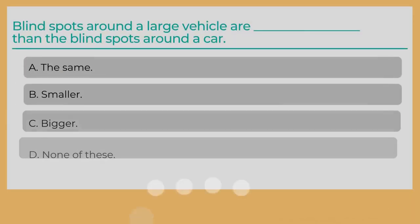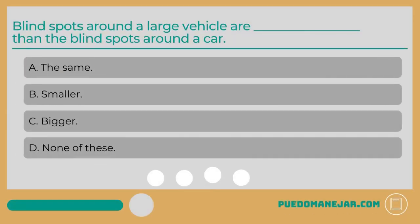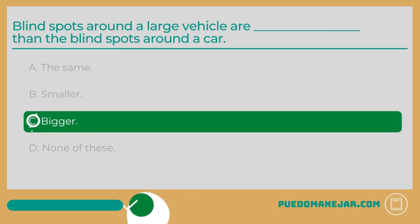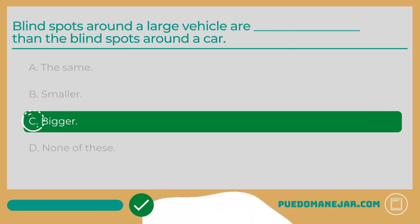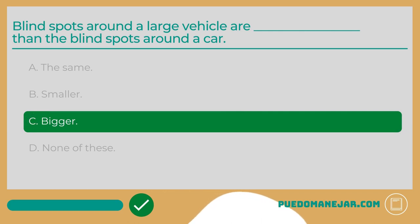Blind spots around a large vehicle are what compared to the blind spots around a car? A: the same. B: smaller. C: bigger. D: none of these. The answer is C: bigger than the blind spots around a car.